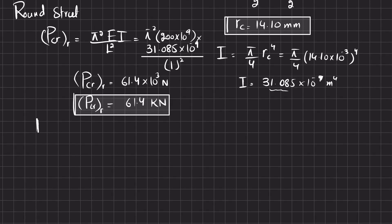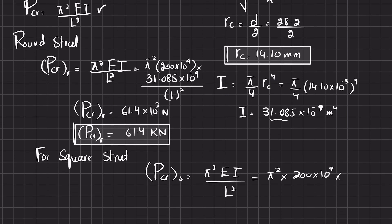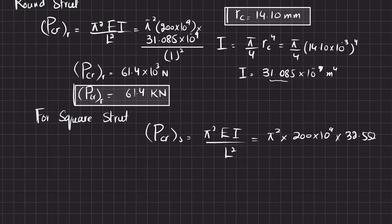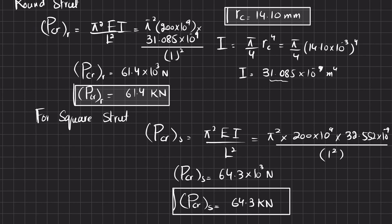For the square strut, P_cr = π² × E × I / L² = π² × (200 × 10⁹) × (32.552 × 10⁻⁹) / (1)². Calculating this gives P_cr for the square strut = 64.3 × 10³ N, or 64.3 kN.